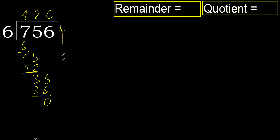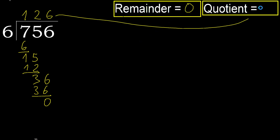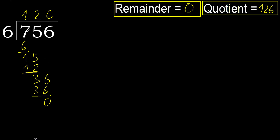Next: there is no more number, therefore finish it. The remainder is 0. Therefore 756 divided by 6 is 126. Ok, thank you.